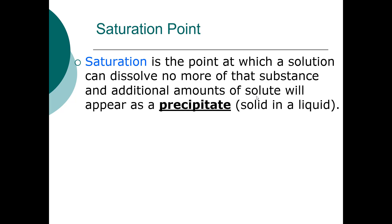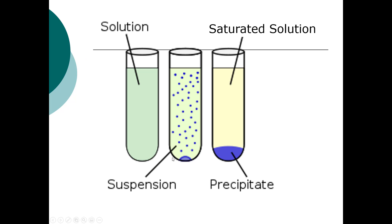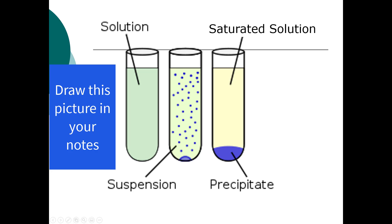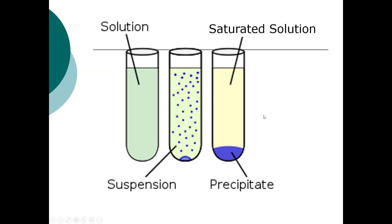The saturation point is the point at which the solution can dissolve no more. Whatever solute hasn't dissolved will appear as a precipitate — a solid in a liquid. You'll look for this saturation point in a lab this week. In a saturated solution, a lot of the solute sits at the bottom as a precipitate, and no amount of stirring will dissolve more — the water molecules are all occupied and can't take any more.